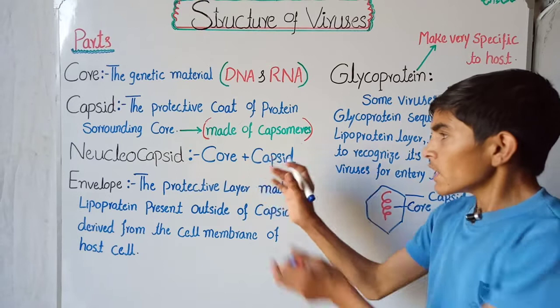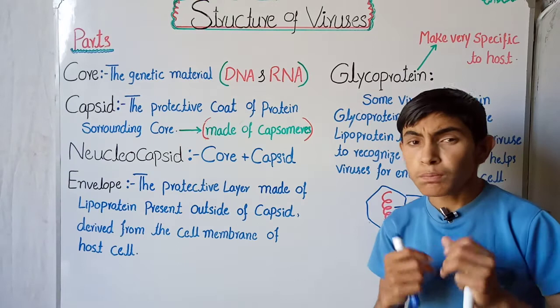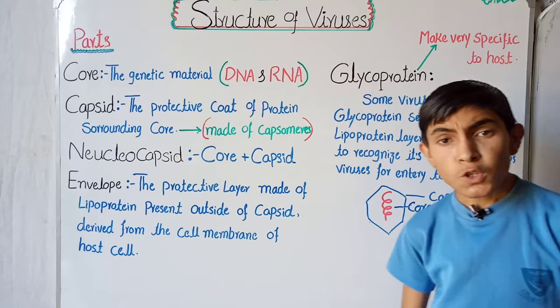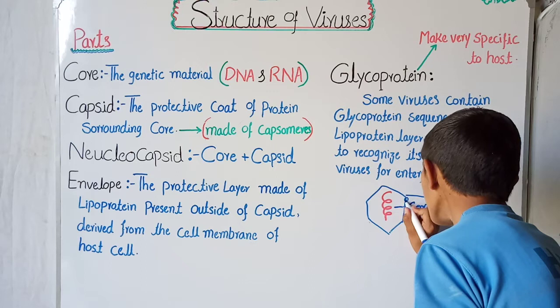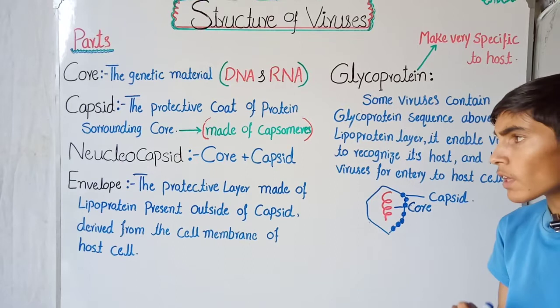Just like monomers combine together to give us a polymer, when a lot of capsomeres combine together they give us the larger compound called the capsid. So capsomeres are the smallest unit of the capsid — the capsid is made of smaller units called capsomeres.